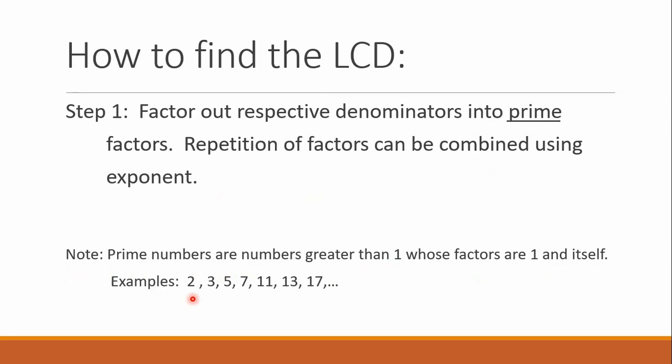2 as the smallest prime number, followed by 3, 5, 7, 11, 13, 17, so on and so forth. So, these numbers have factors that is only the number 1 and itself.